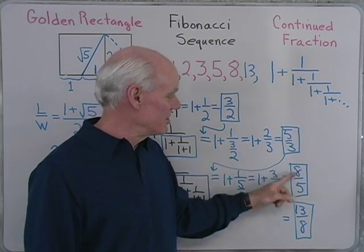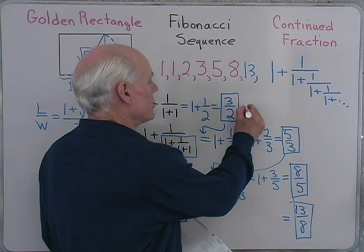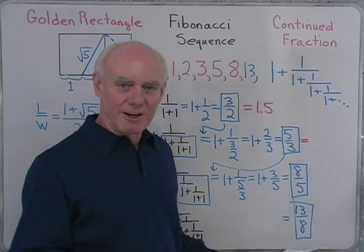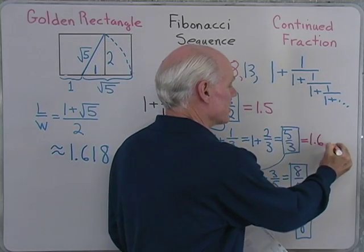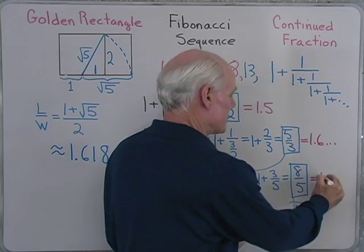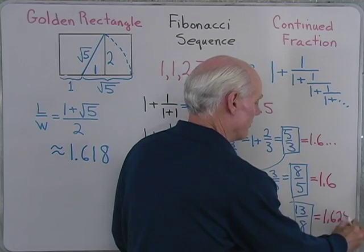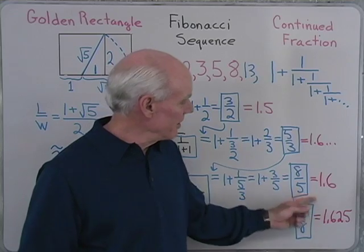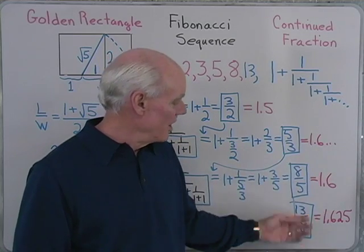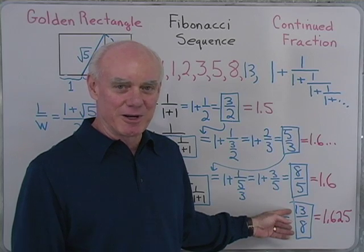Now the next thing I want to do is take each of these fractions and convert it to a decimal. So when I do that, when I convert to a decimal, this turns out to be 1.5. 5 thirds, when I divide 3 into 5 or do it on a calculator, I end up with 1.6 repeating. 8 fifths turns out to be 1.6. And then 13 eighths will turn out to be 1.625. So what's happening right here is that it looks like it's going towards 1.6 something. That 6 is kind of stabilized. If we could go further on down this sequence of ratios of consecutive members of the Fibonacci sequence, we might get a better idea of where this is going.